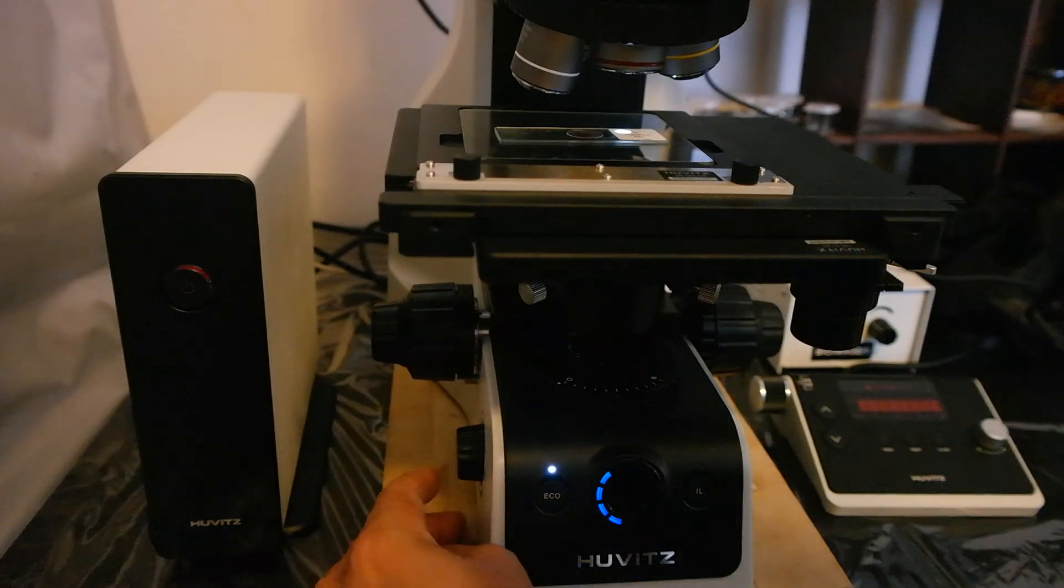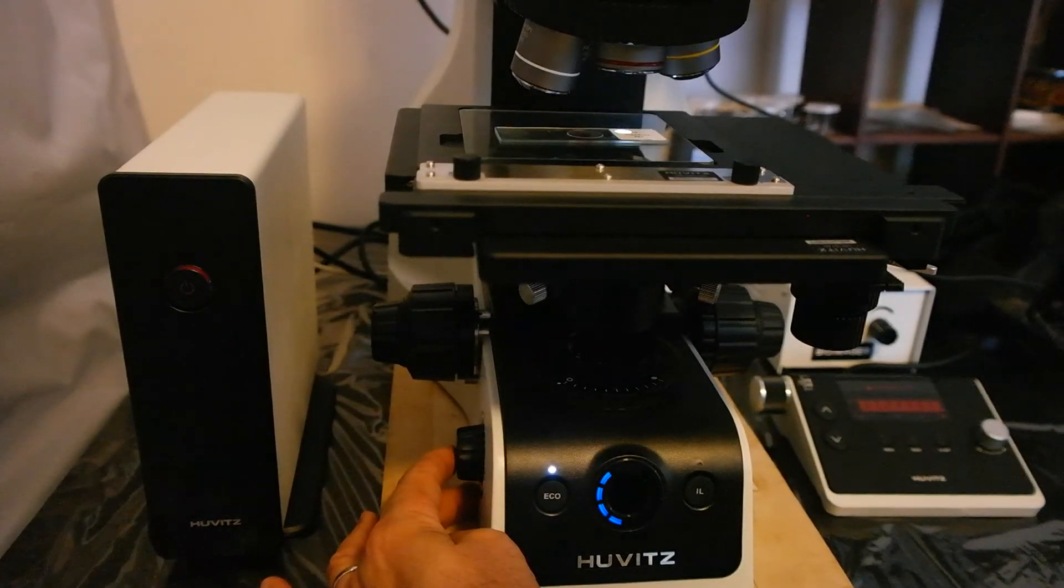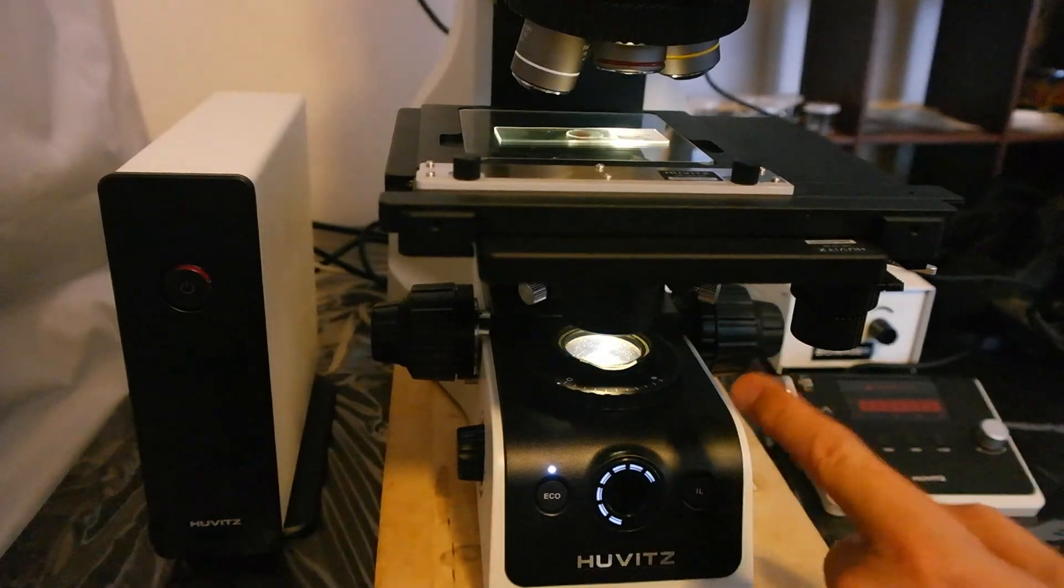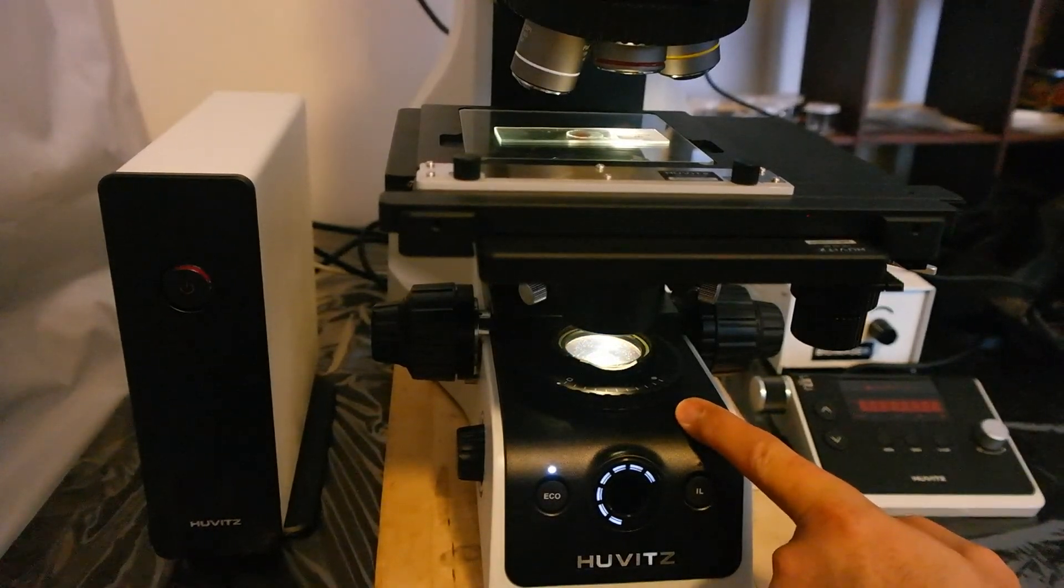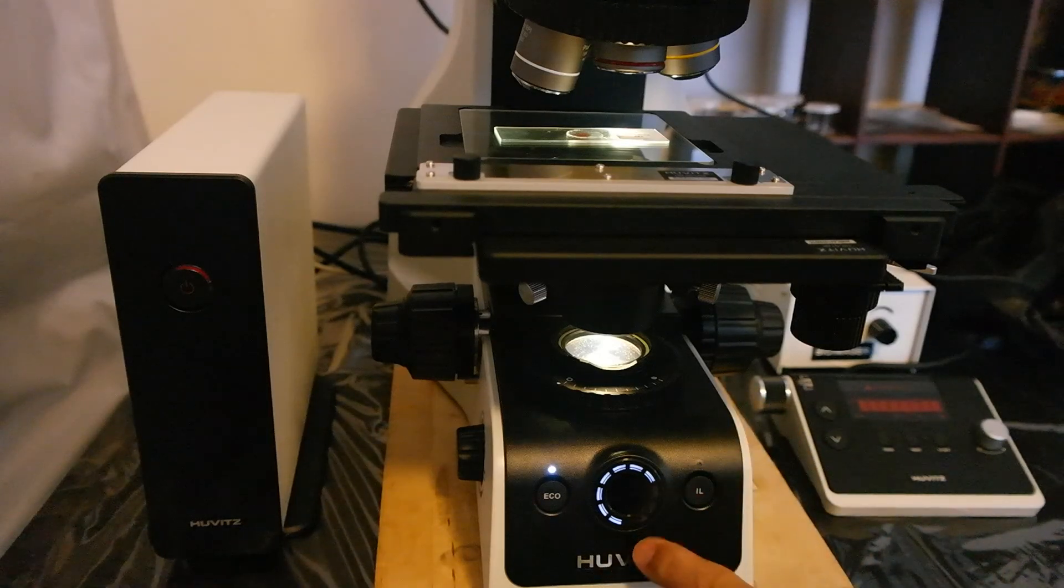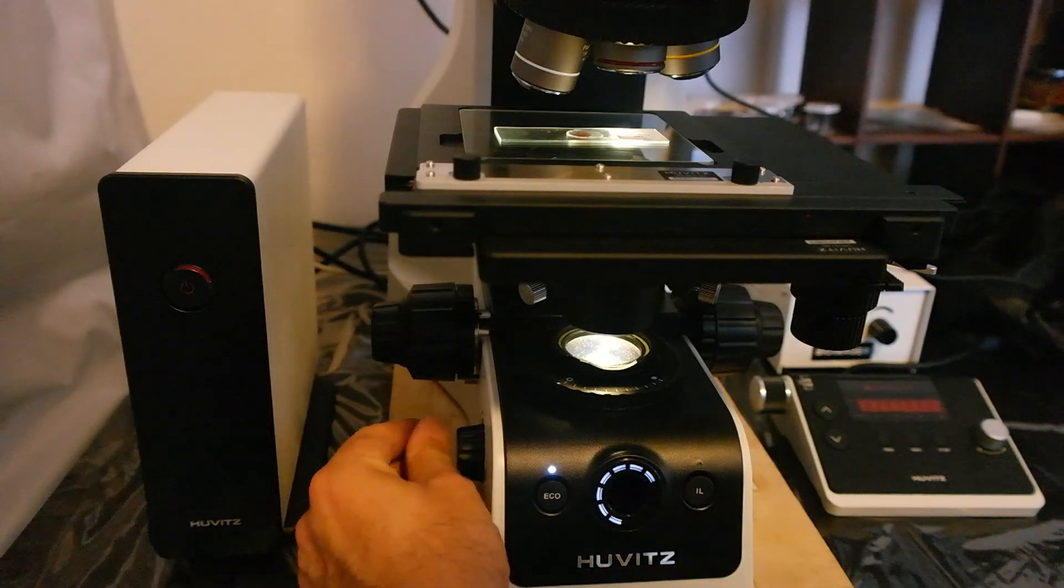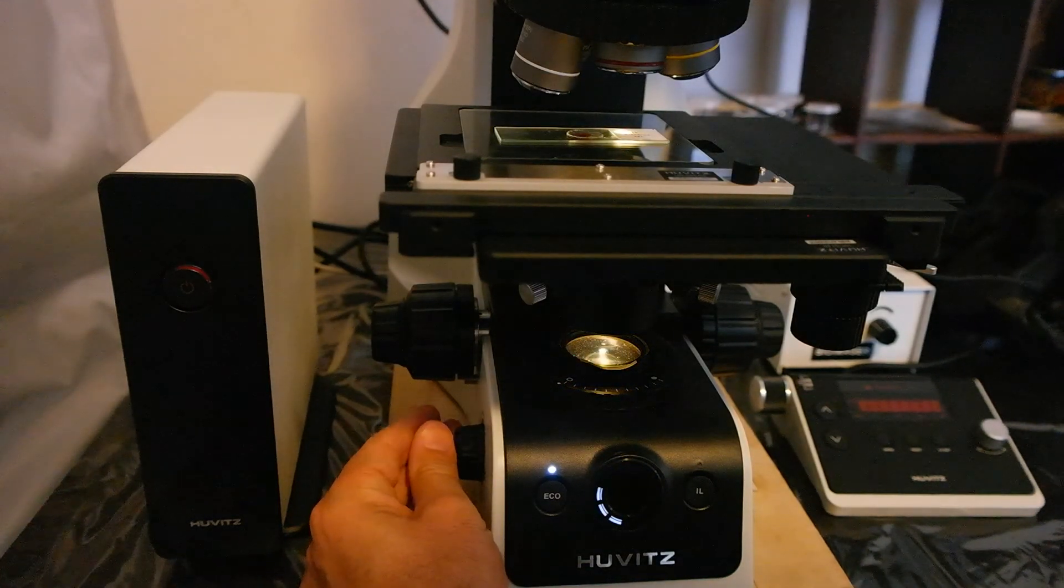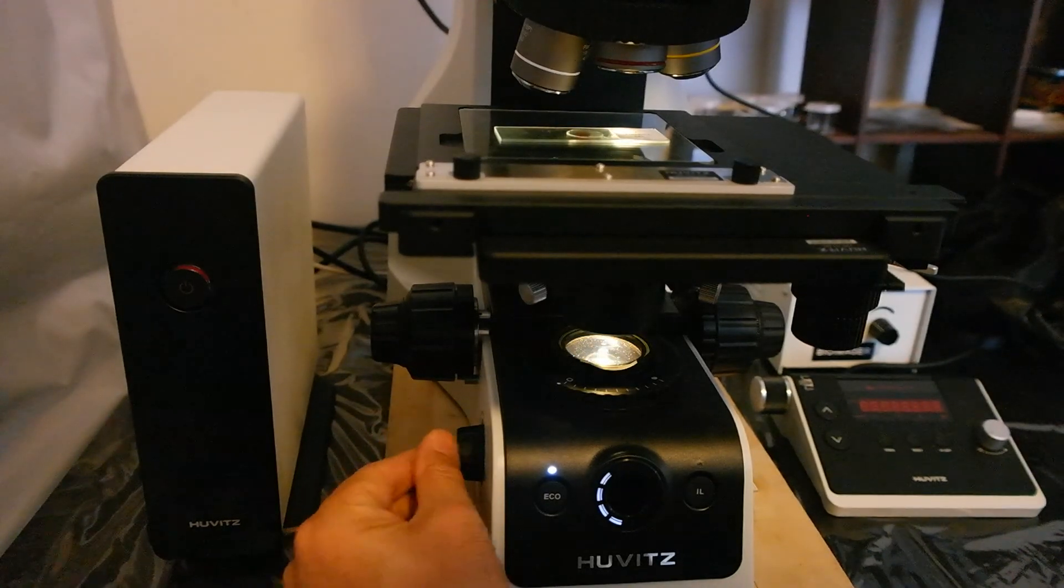There is a button on the left side to switch the lights between reflected and transmitted. Right now the reflected light is on, and as you see the indicator is blue LED. If I push this, then the light switches to transmitted from the bottom and the light indicator becomes white. Also, this knob can reduce or increase the light intensity.